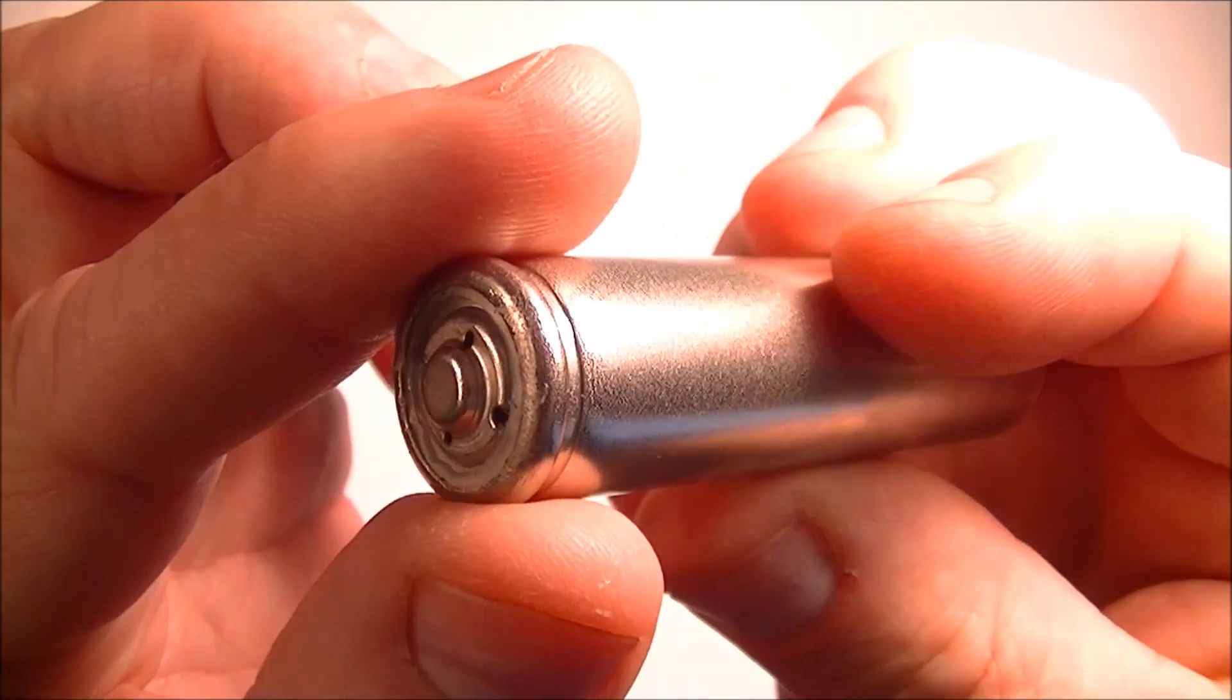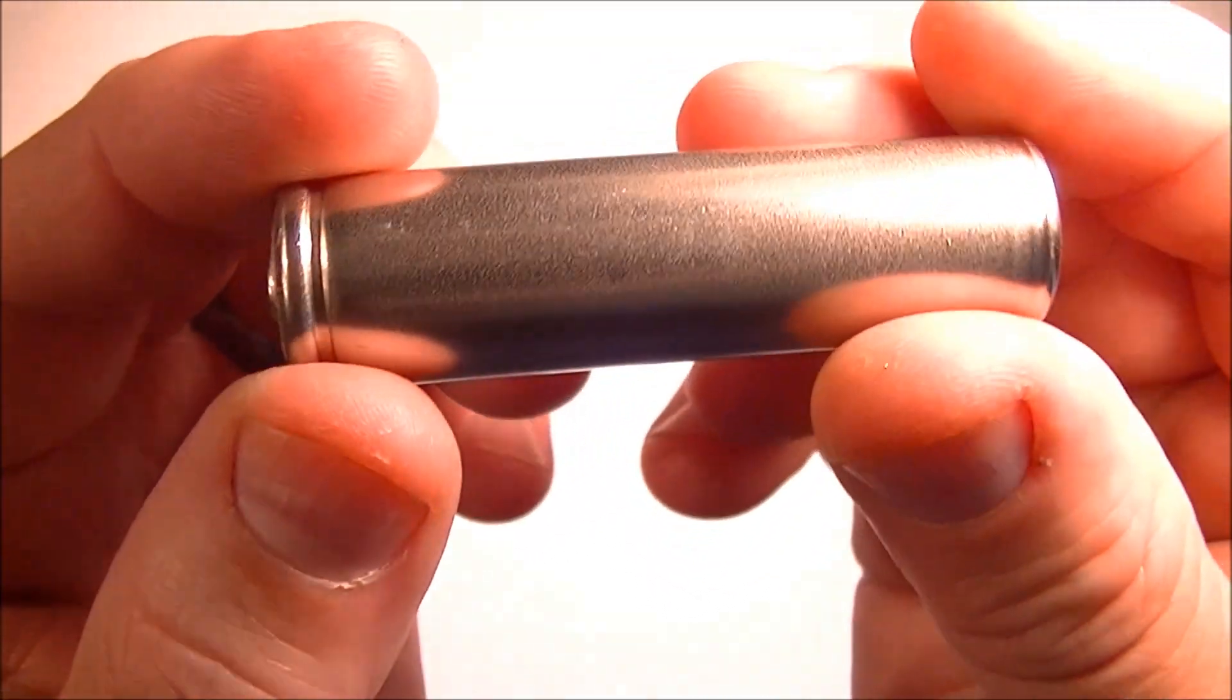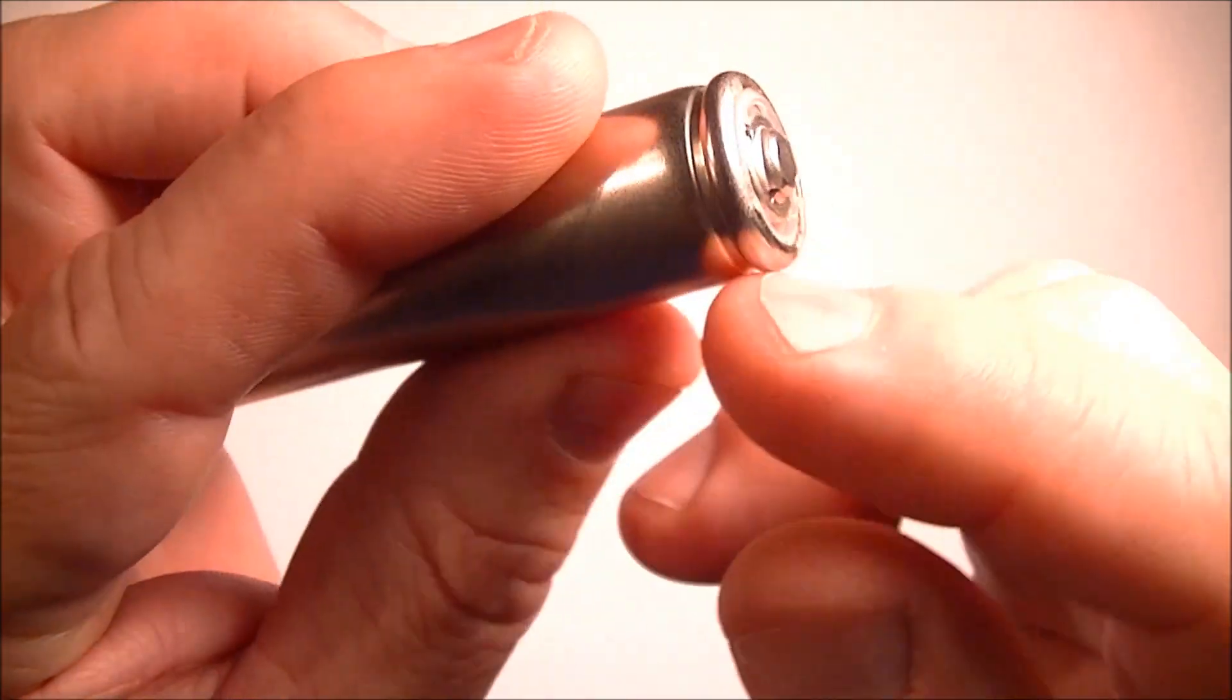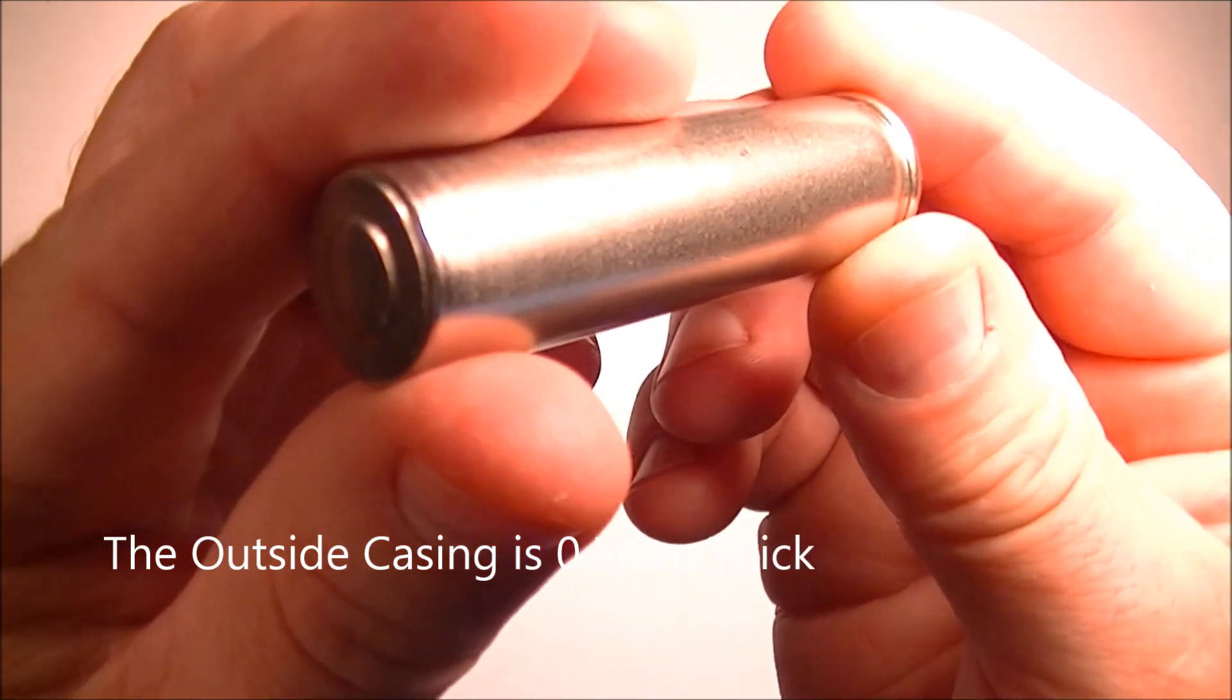So there's the top end, there's the bottom end, and the outside shielding. I'm going to take the Dremel and cut it open. Let's see if there is any circuitry at all and what exactly is inside it.